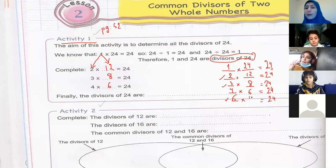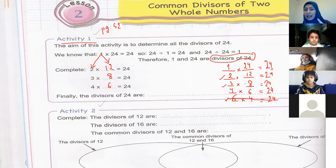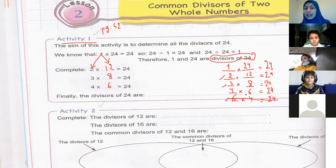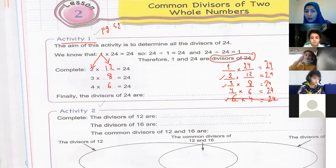Now when do I stop? I stop when we have repetition. For example, four times six is the same as six times four. So I will cross that out and stop. What are the divisors? I will list them in order: one, two, three, four, six, eight, twelve, twenty-four.